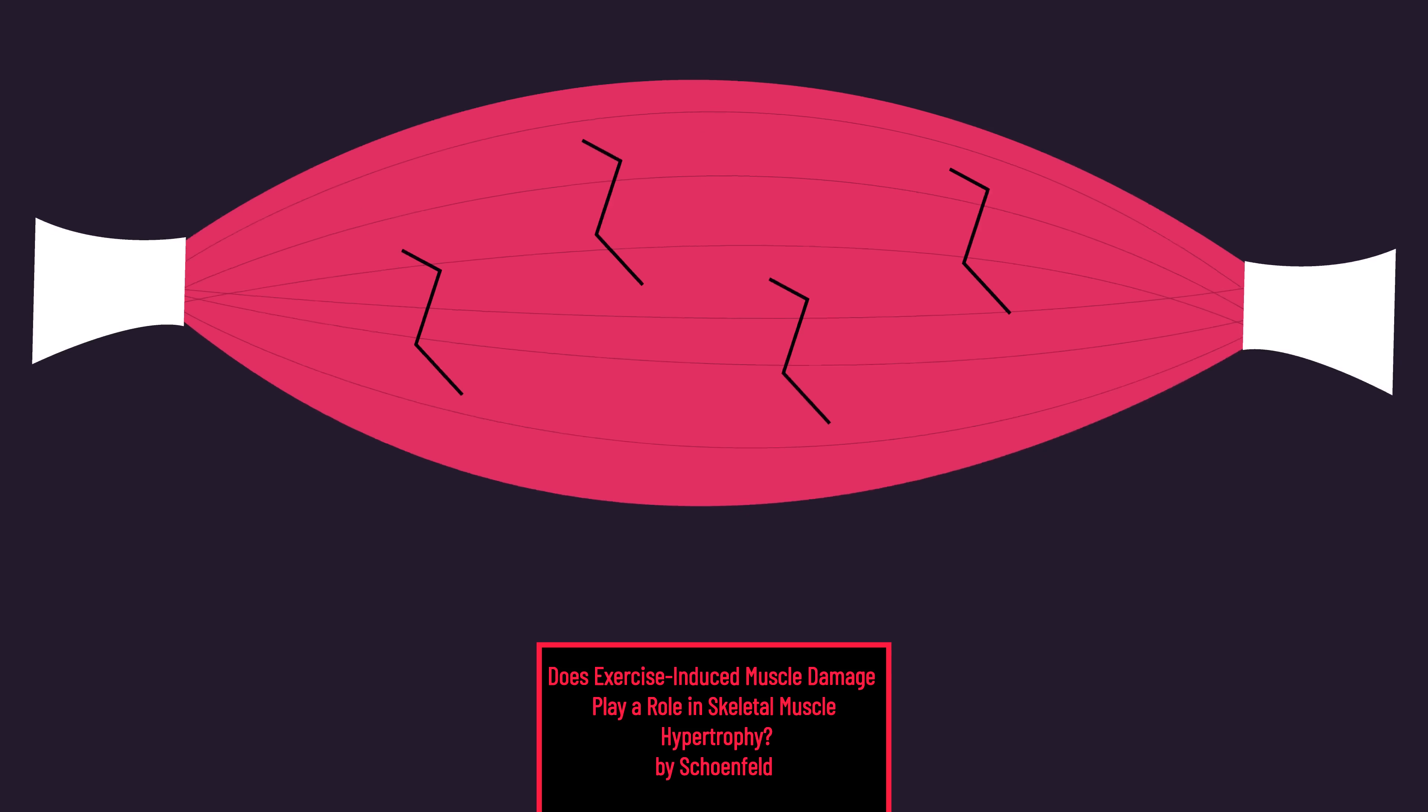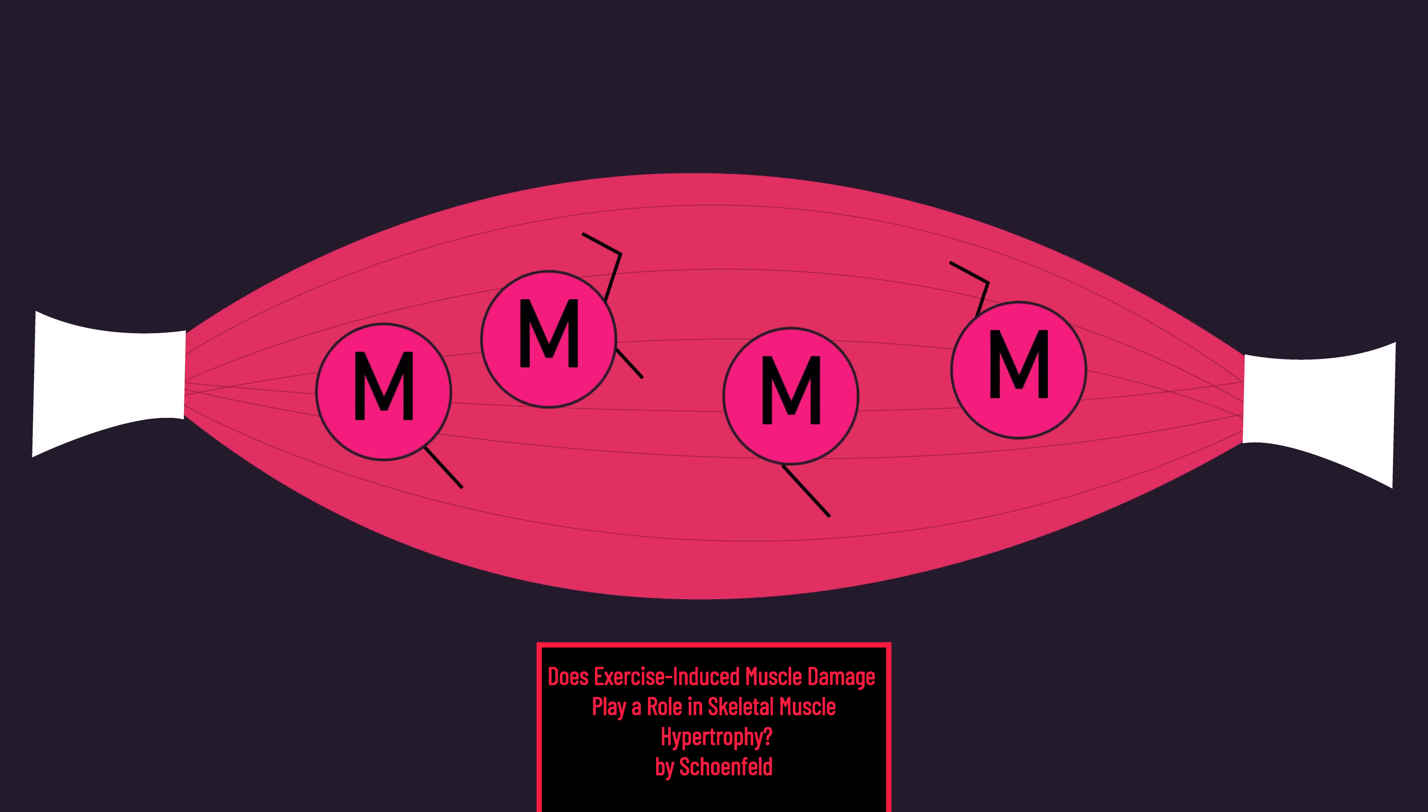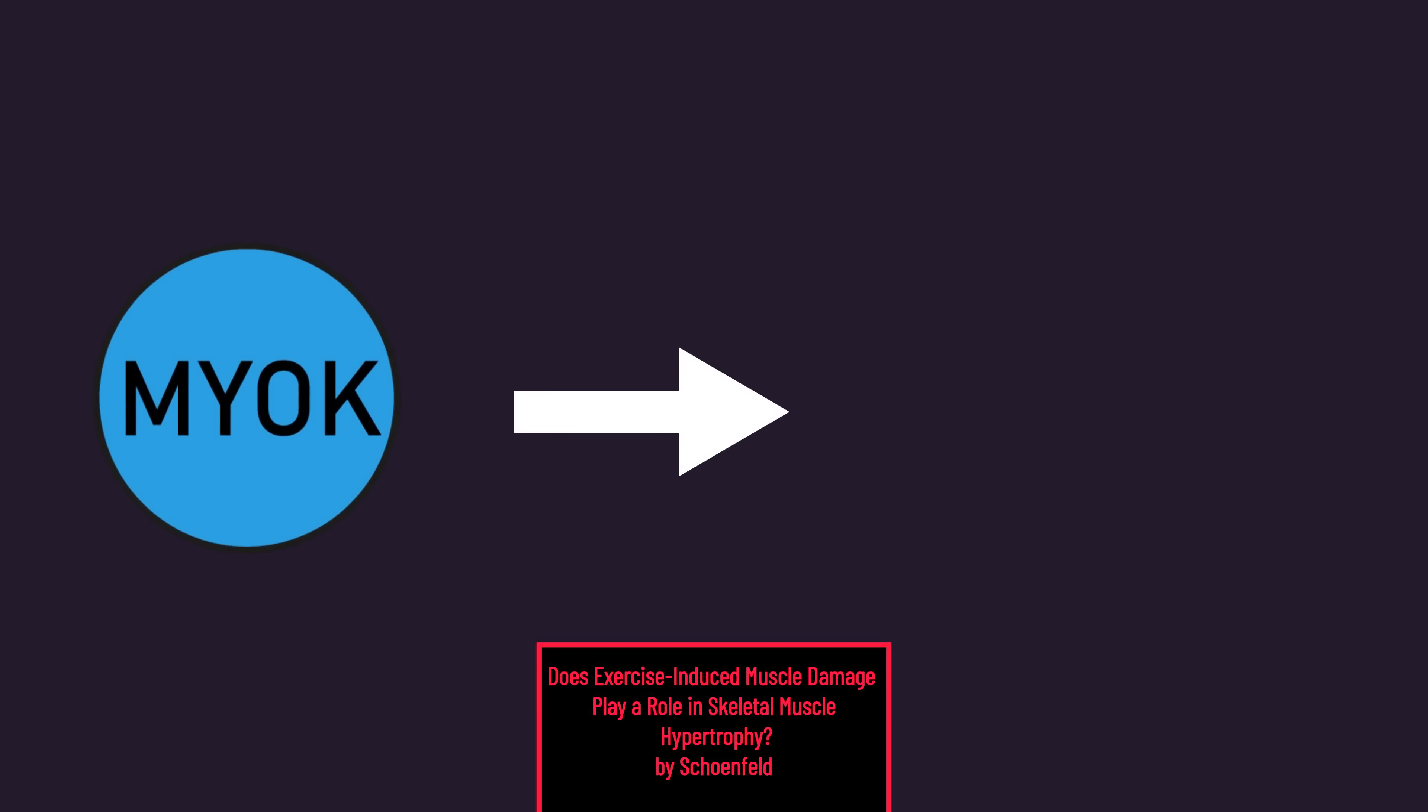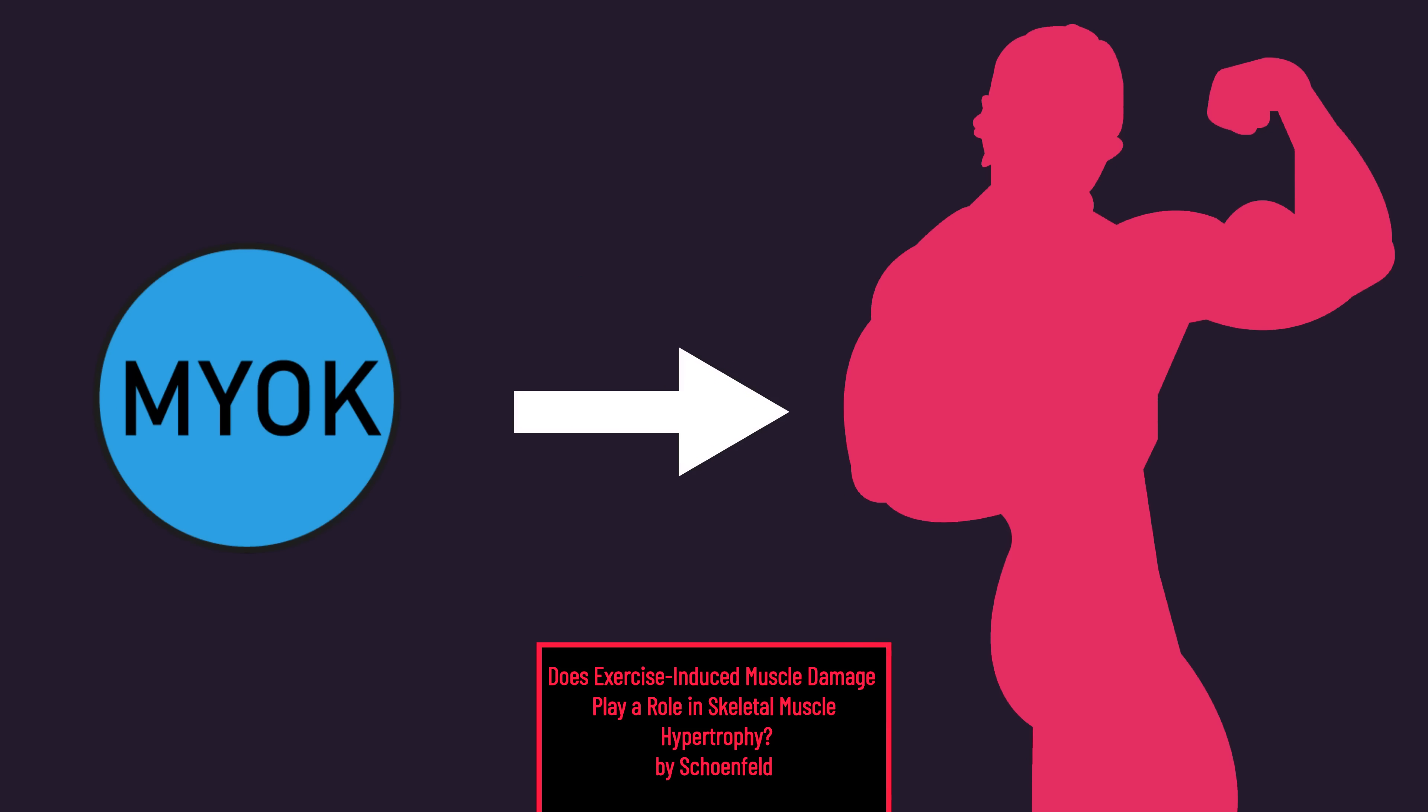Moreover, another immune cell called macrophages are also believed to produce something called myokines. And myokines are small proteins that may also promote muscle hypertrophy.